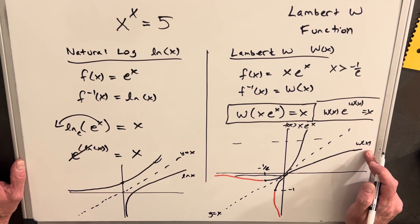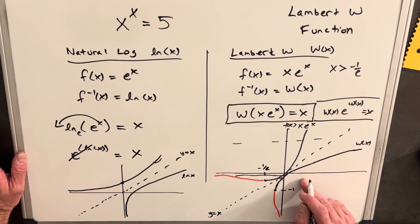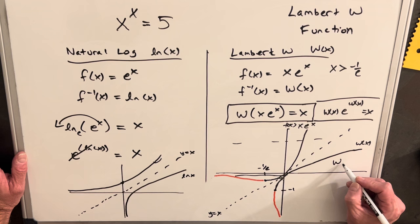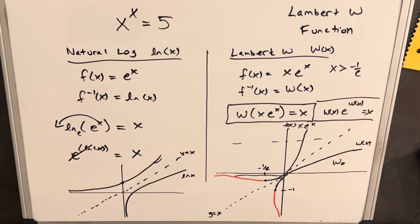So we'll define this black curve to be our principal branch of the Lambert W function. We'll usually be dealing with this principal branch. If you go on Wolfram Alpha, they denote it with W sub zero.